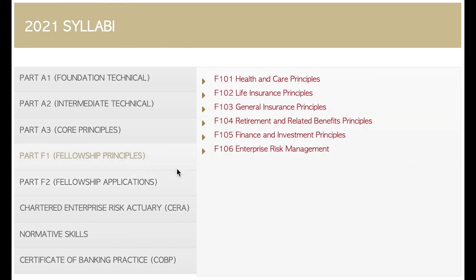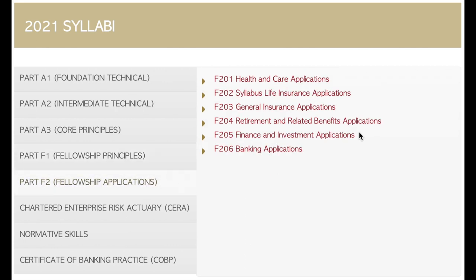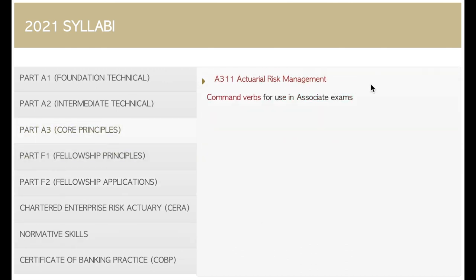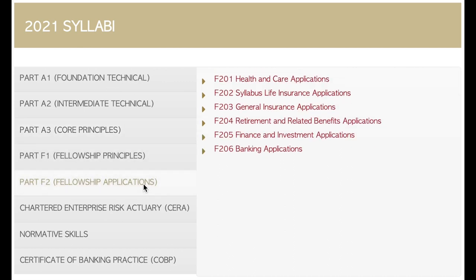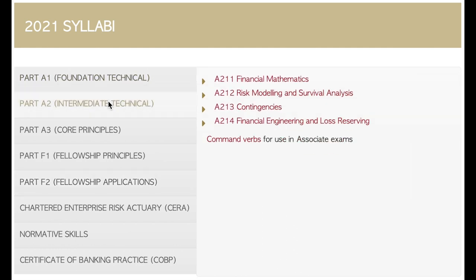I wrote finance and investments and enterprise risk management, and then did my fellowship in finance and investment applications. I always thought I knew finance really well, but I only passed that exam on my third attempt — there is definitely a lot of depth to each of these topics. Sometimes you pass the actuarial risk management exam and think you know all these subjects well, but the fellowship shows there is still a lot more depth to go into. For me, it took three years — almost the same amount of time it took to pass all the intermediate and technical subjects combined.